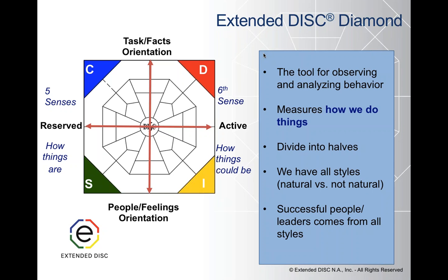D's, because they're task-oriented, make decisions based on the facts they know. As soon as they have enough information, they make a decision. I's also make decisions very quickly, but theirs are much more impulsive and intuitive.